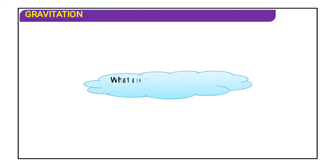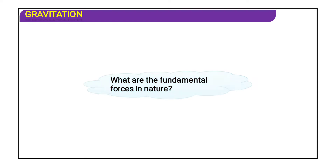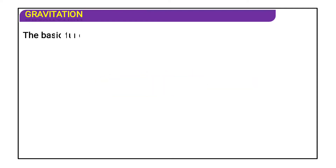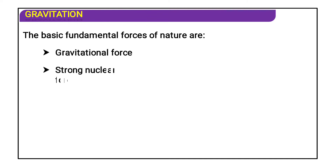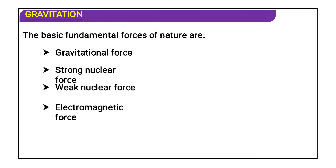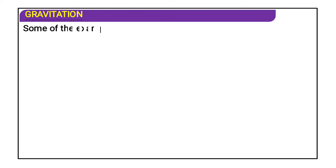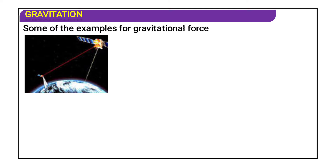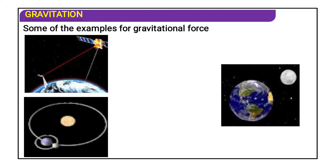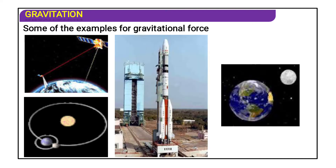It is the gravitational force that always makes things fall in downward directions. The earth is revolving around itself and rotating. The fundamental forces in nature are: gravitational force, strong nuclear force, weak nuclear force, and electromagnetic forces. Some examples of gravitational force are satellites revolving around the earth, and the moon revolving in its orbit.